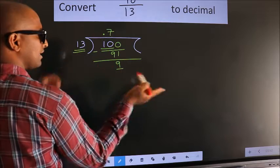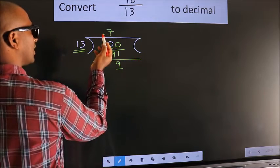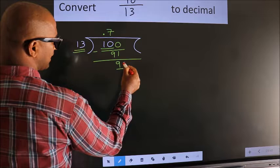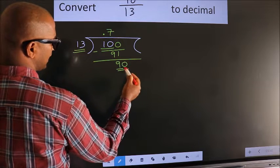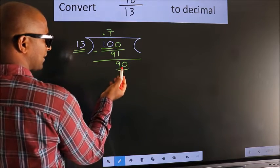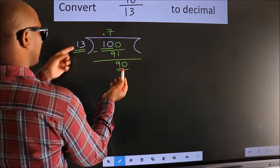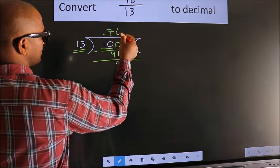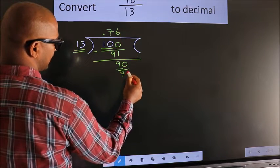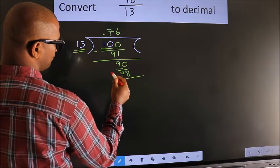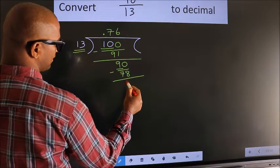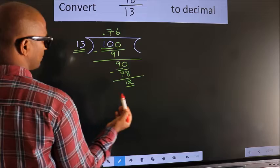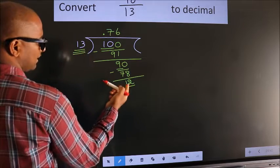Here we have 9, and 9 is smaller than 13. We already have the decimal so we can directly take a 0, giving us 90. A number close to 90 in the 13 times table is 13×6=78. Now we subtract and we get 12.